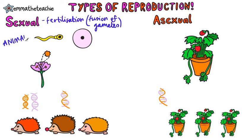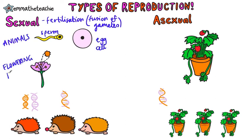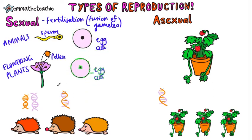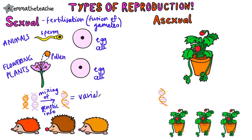In animals, the male gamete is the sperm cell and the female gamete is the egg cell. But in flowering plants, the male gamete is actually pollen, but the female gamete is still an egg cell. When the gametes fuse together, there's mixing of genetic information from the male and the female.